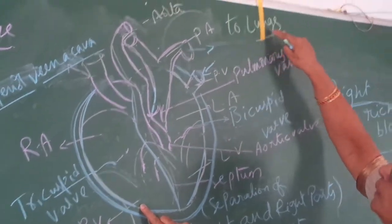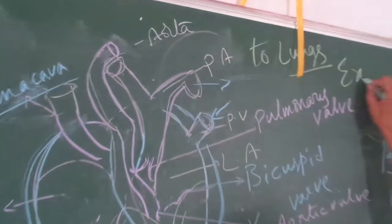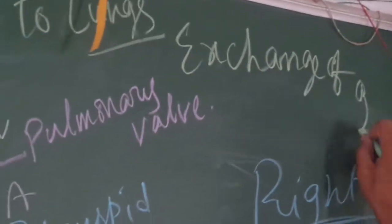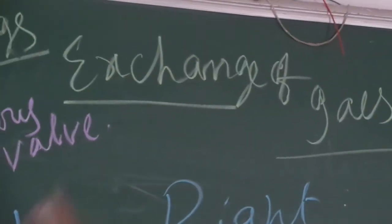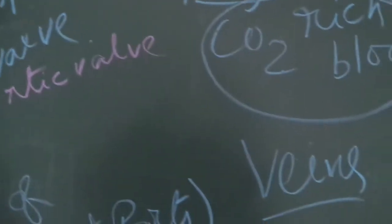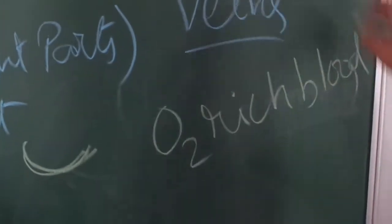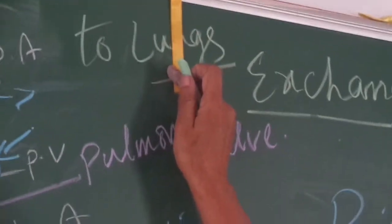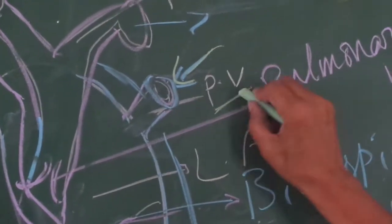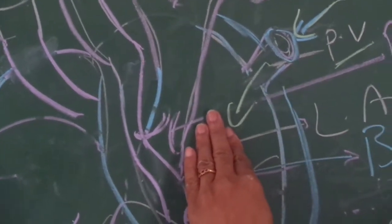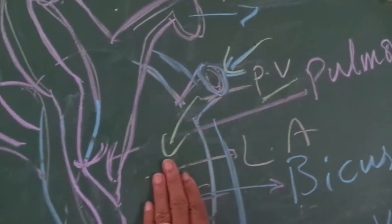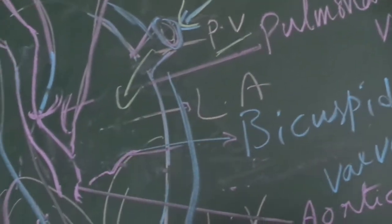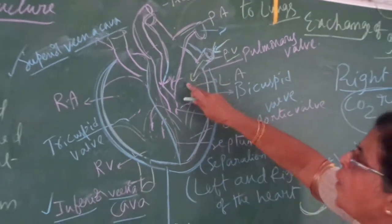The pulmonary artery sends blood to the lungs for exchange of gases. After the exchange — carbon dioxide and oxygen exchange mutually — the blood becomes oxygen-rich. From the lungs, the oxygen-rich blood is brought back by the pulmonary vein to the left atrium. Pulmonary vein carries pure oxygenated blood from the lungs to the left atrium.